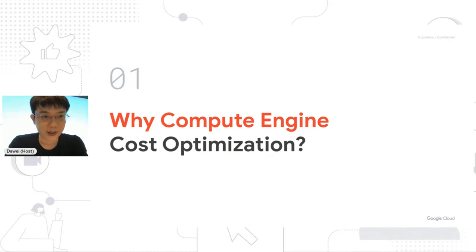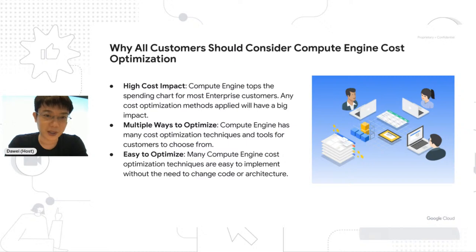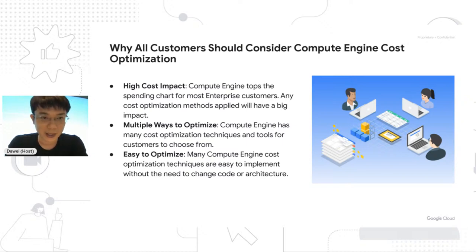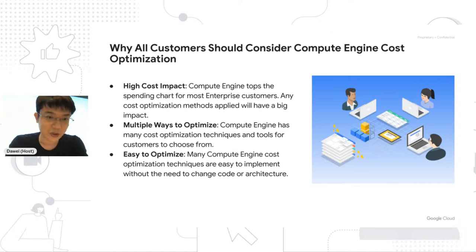The first topic is: why Compute Engine cost optimization? Compute Engine is still one of the top services customers use on Google Cloud and other cloud providers. Because many customers use a lot of Compute Engine resources, any cost optimization methods applied will have a big cost impact. Also, because Compute Engine is a very mature product, it has many ways to optimize cost, and many techniques are easy to implement without needing to change code or architecture.